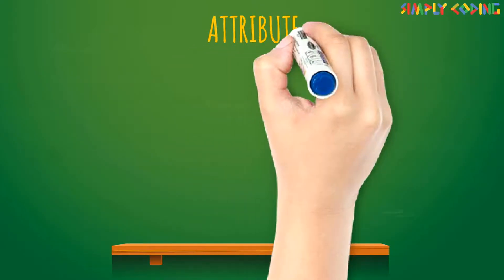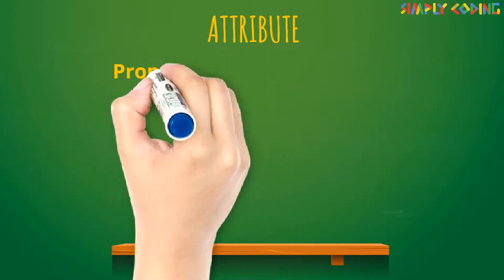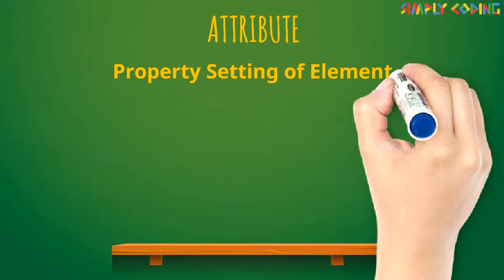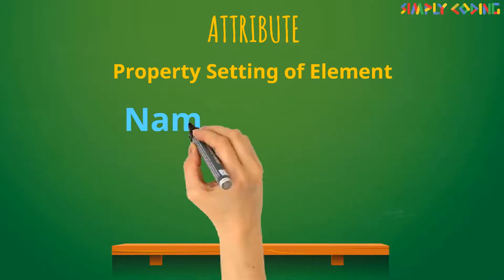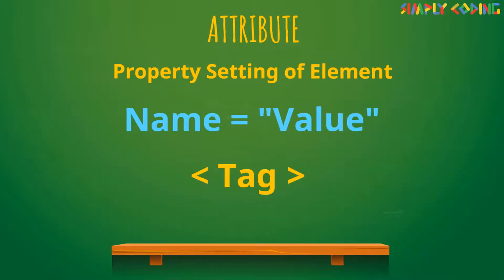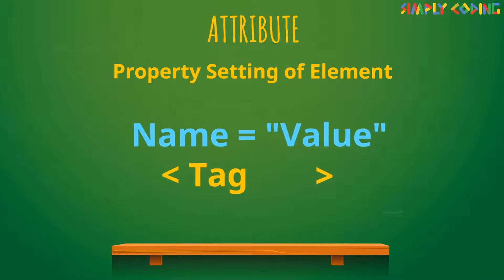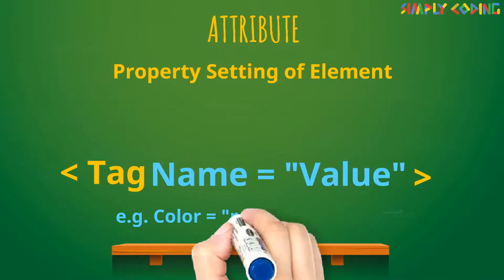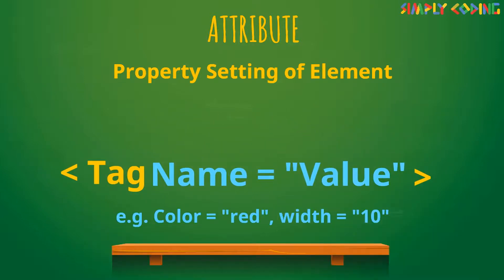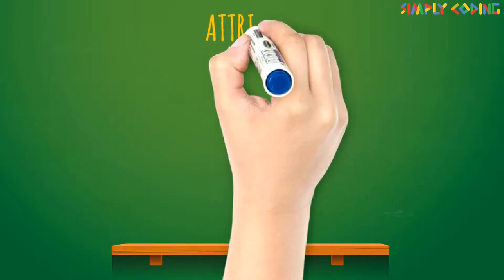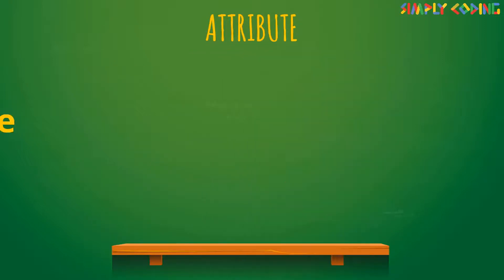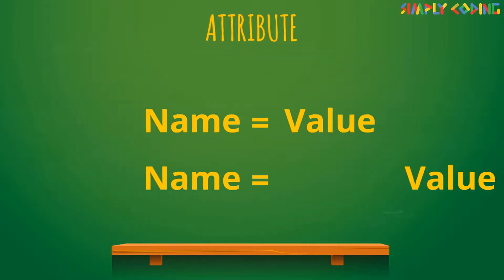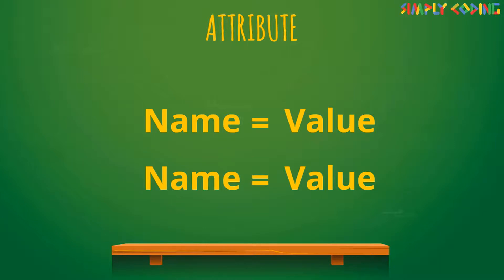Now let's understand what are attributes. An attribute is the property setting of an element. It is used inside the opening tag to specify additional information to the tag, such as size, width, etc. Attributes are defined as name-value pairs, and attribute values are enclosed in quotation marks — either single or double.